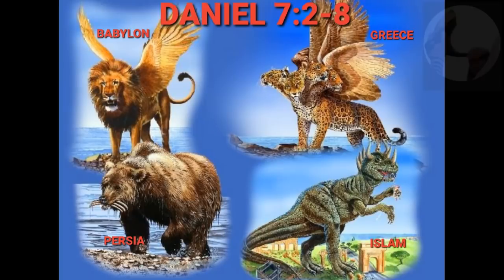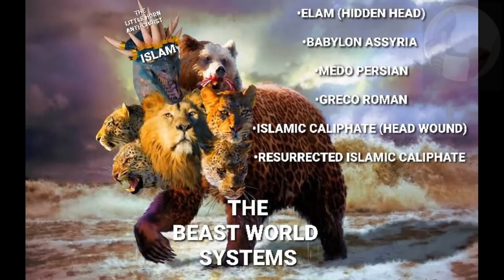So, the beasts as described by Daniel in Daniel chapter 7: Babylon, Assyria, Medo-Persia, Greco-Roman, and the final beast, Islam. In its first manifestation it existed and then it died a natural death. The Ottoman Empire pretty much died after the first World War. The beasts as described in Revelation 13 are basically telling us that this beast system is created by the same spirit over and over again — the idea of the phoenix.